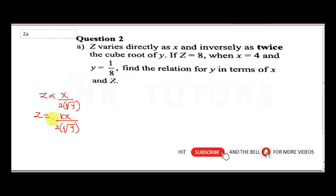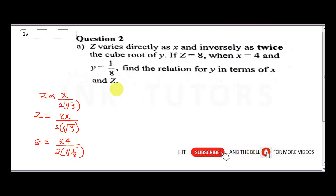Now, using the given values — z = 8, x = 4, and y = 1/8 — we substitute to find k. So we have: 8 = (k · 4) / (2 · ∛(1/8)).